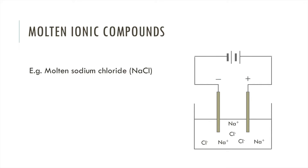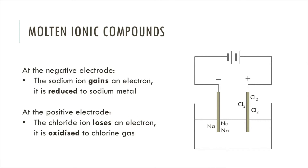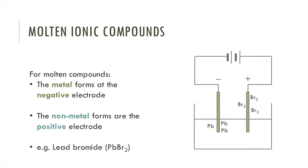Taking the example of sodium chloride, our electrolyte is made up of Na⁺ ions and Cl⁻ ions. The positive sodium ions are attracted to the negative electrode, and the negative chloride ions are attracted to the positive electrode. At the negative electrode each sodium ion gains an electron — this means they're reduced to sodium metal. At the positive electrode each chloride ion loses an electron, which means they're oxidised to chlorine gas. So the general rule for molten ionic compounds is that the metal forms at the negative electrode and the non-metal forms at the positive electrode.